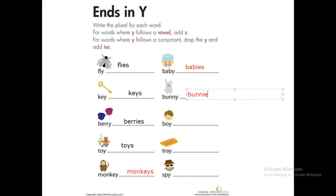Bunny, change the 'y' to 'i' then add 'es'. Boy, we have a vowel before the 'y', just add 's'. Tray, we have a vowel before the 'y', just add 's'. Pie will be pies, 'i', 'e', 's'.